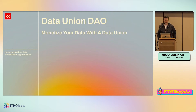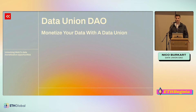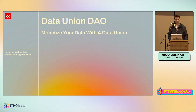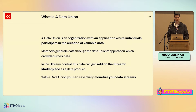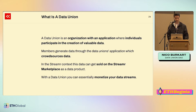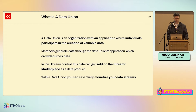I'm Nico, the developer relations engineer for Data Union DAO. Matthew just told you how you can handle all the data stuff, and I'm going to tell you how you can actually monetize this data. You monetize it with a data union. A data union is an organization with an application where individuals participate in the creation of valuable data — members generate data through the data union's application, which crowdsources data. In the Streamr context, this data can then get sold on the Streamr marketplace, and with a data union you can essentially monetize your data streams.